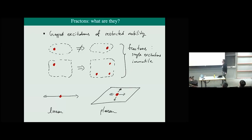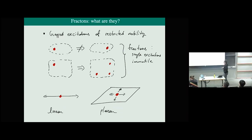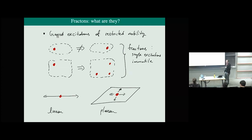I'll start with just a little bit of review about fractons. We already had some nice review in the talk before lunch. What are fractons? These are gapped excitations above the ground state of some quantum many-body system like a spin model. These phenomena, at least in their simplest guise, only seem to occur in three spatial dimensions and higher. We'll focus on three dimensions.